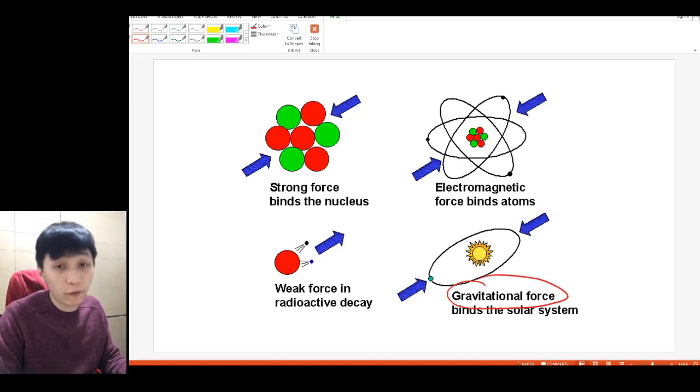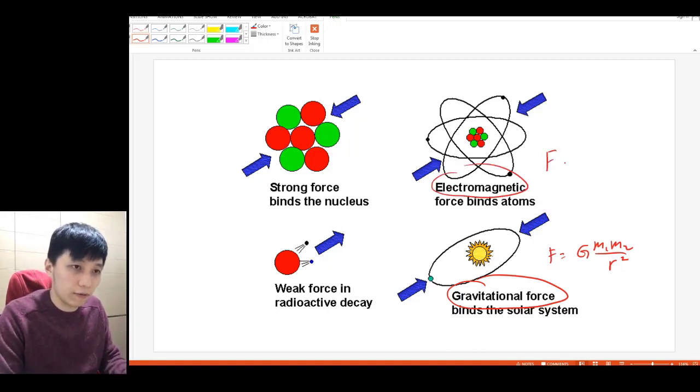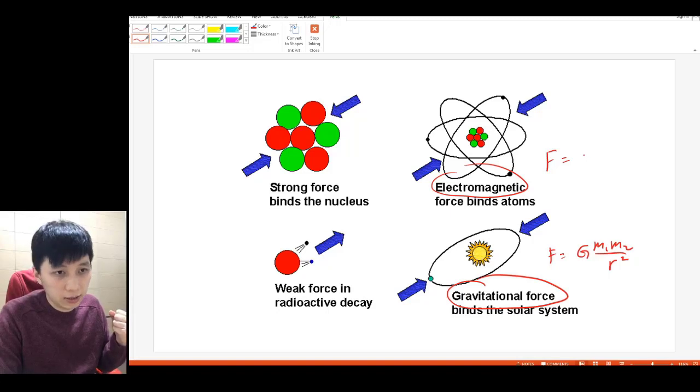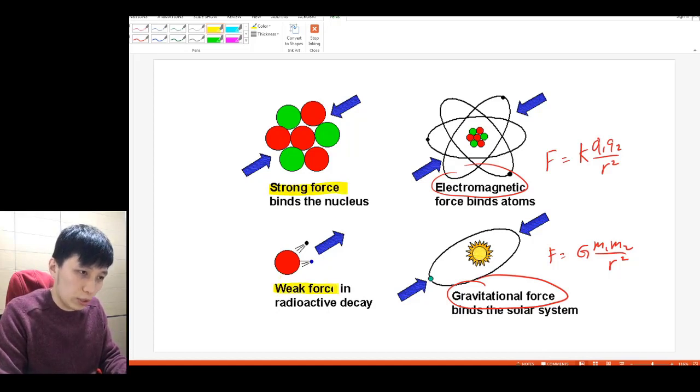So these four forces—two of them you must know very well. One is the gravitational force, which you have learned about, the equation F equals G M1 M2 over R squared. And the other one is called the electromagnetic force, which is also the force that you have learned about, the equation that is very similar to gravitation, that is K Q1 Q2 over R squared in its simplest form. The other two forces that probably you have never heard about before, and that is strong force and weak force.